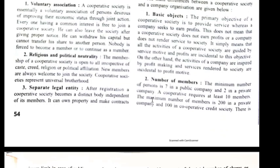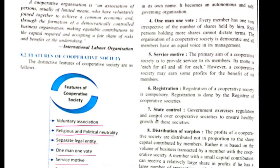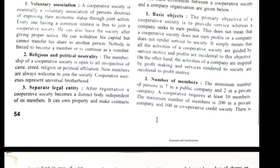Third is separate legal entity. After registration, a cooperative society becomes a distinct body irrespective of its members. It can own property and make contracts in its own name. It becomes an autonomous and self-governing organization. Once you register your cooperative society, it becomes a separate entity like a company — it can make decisions, make contracts, purchase properties, and do business.